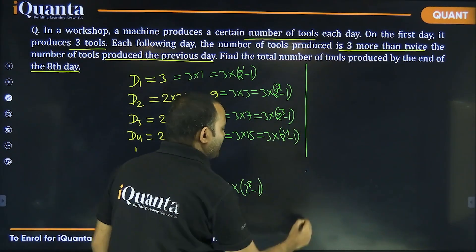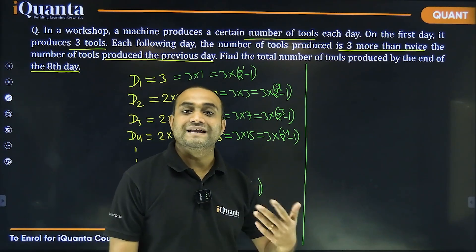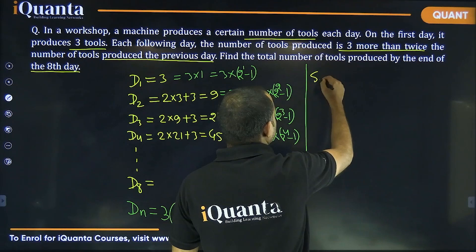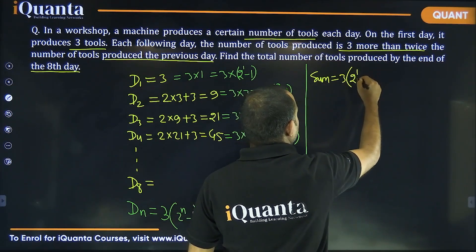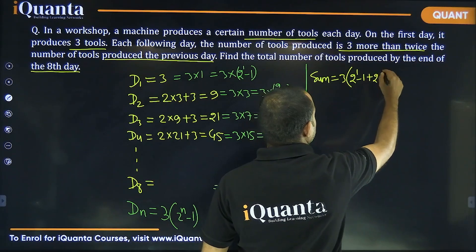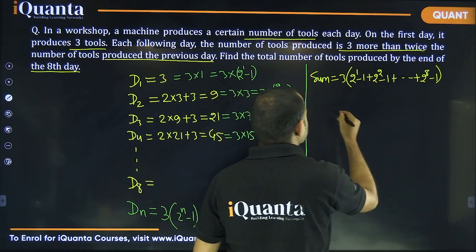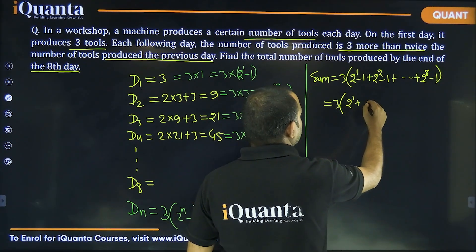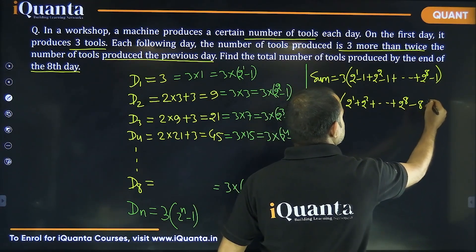Now, we need to find total number of tools produced in the first 8 days. So, we need to add all these. We can take 3 common. If I take 3 common, it will be 2 to the power 1 minus 1 plus 2 to the power 2 minus 1 and so on, 2 to the power 8 minus 1. This will be equal to 3 into 2 to the power 1, 2 to the power 2 till 2 to the power 8 minus 8.